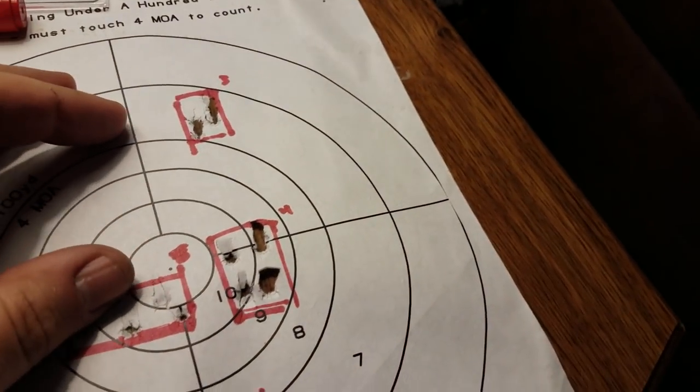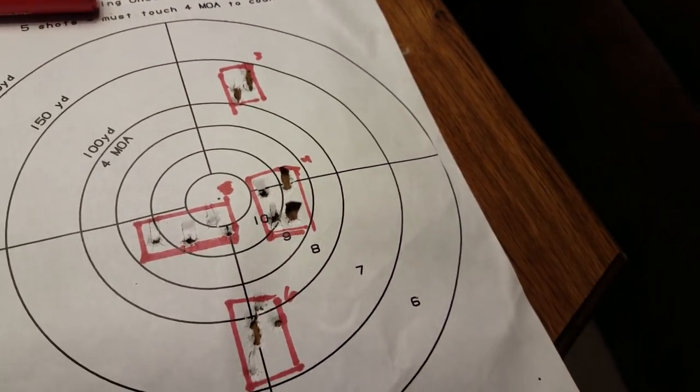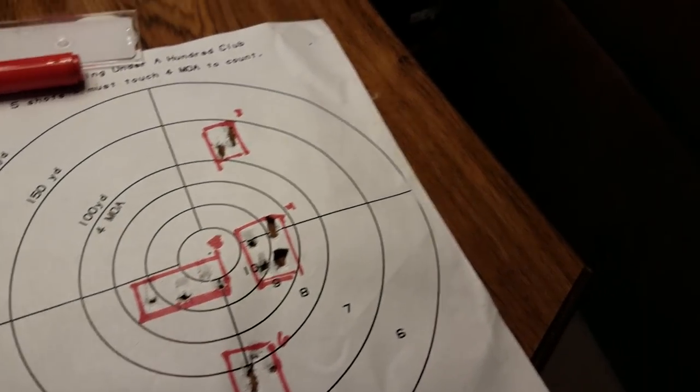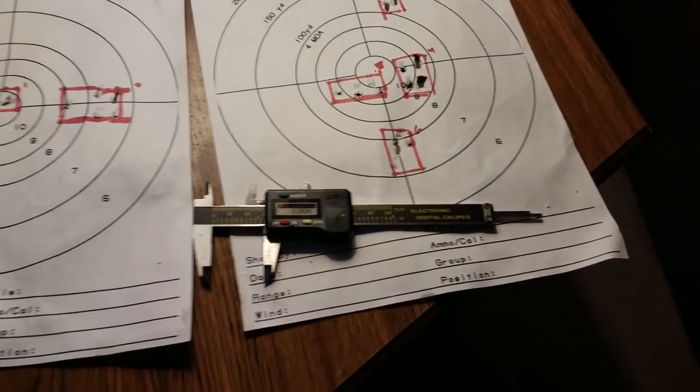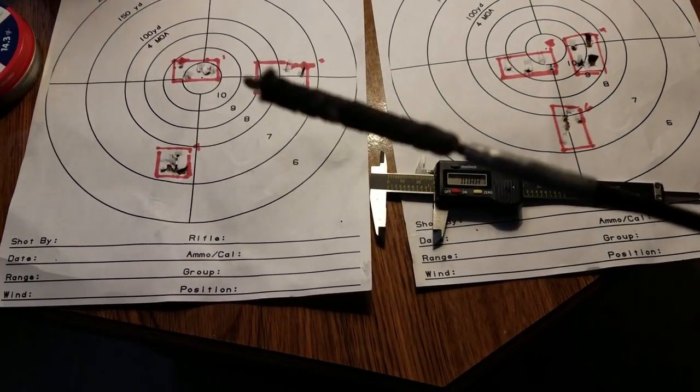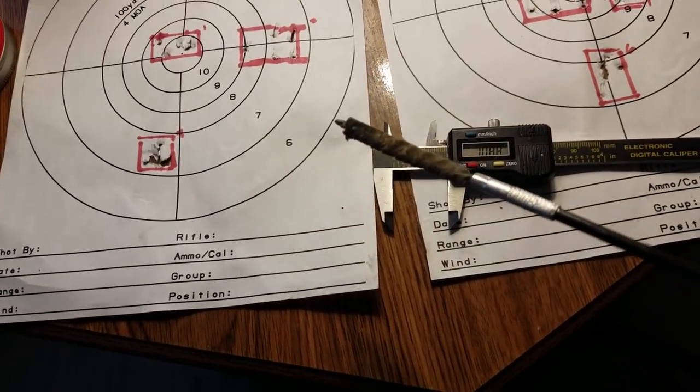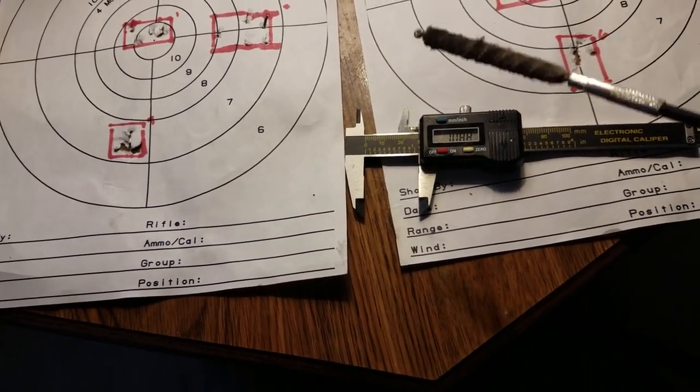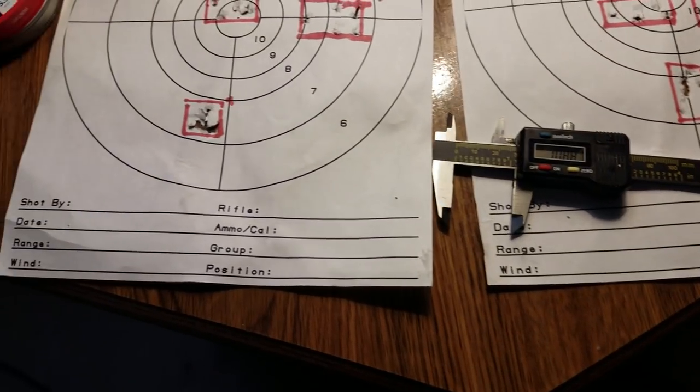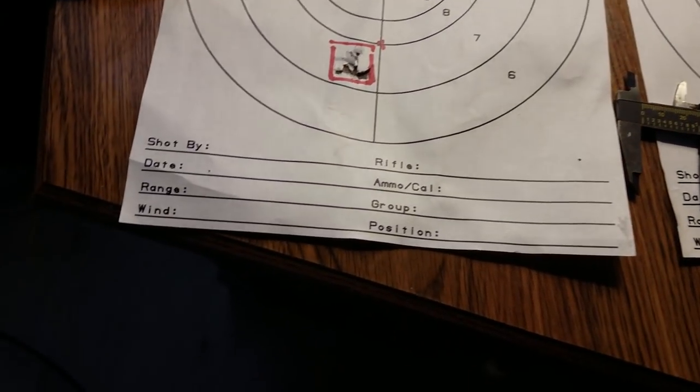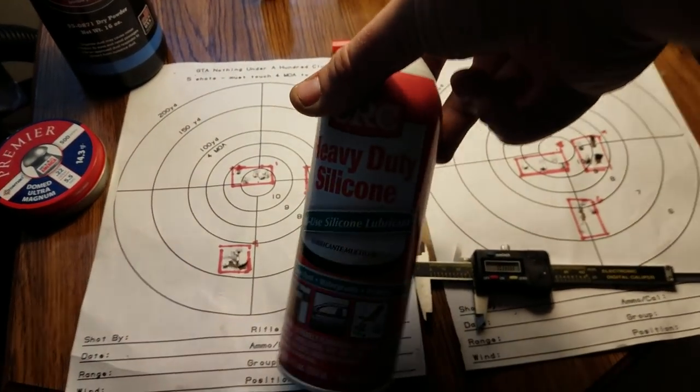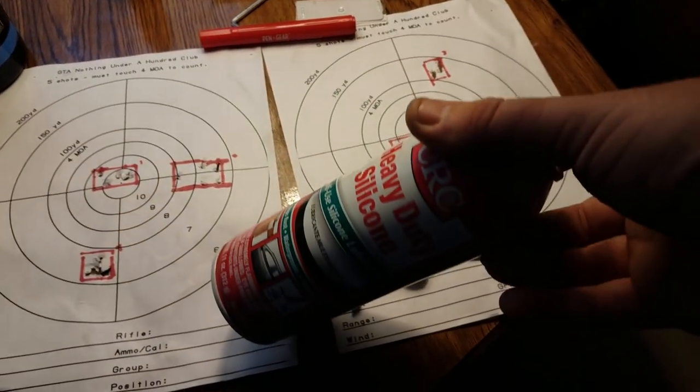I lubed the barrel. How did I do that? I swabbed the barrel with the wool cloth. Make sure I wanted to make sure it was perfectly clean. I wanted to make sure it was clean, all the lands and grooves all the way down the barrel. I want to start off with a clean barrel again. And I have this, if you guys are an air gunner, I highly recommend getting this stuff, heavy silicone lube.